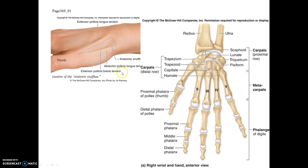A scaphoid fracture results from landing on an outstretched hand. The scaphoid is located within the anatomical snuff box — when you slightly abduct the thumb, a tendon emerges and creates this space where the scaphoid lies. The radial artery crosses this region, so if the scaphoid is fractured, blood supply to the proximal region can be compromised. If it doesn't heal properly, this can lead to avascular necrosis and degenerative joint disease in that area.